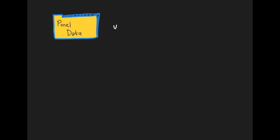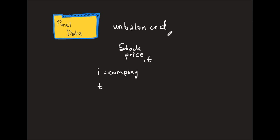Today we're going to talk about unbalanced panel data. So what is the meaning of unbalanced? In panel data, for example, if we want to look at stock price, we have E and T, where E stands for the entity or company, and T stands for time.